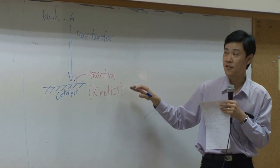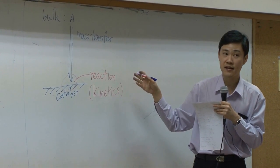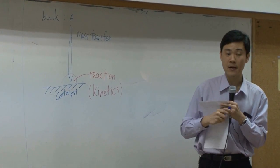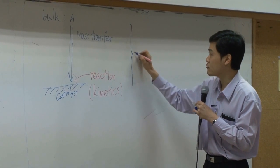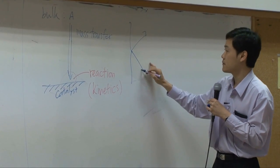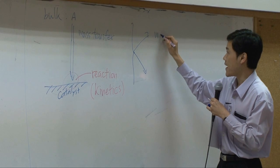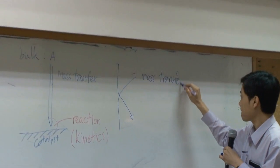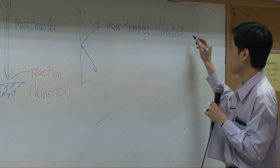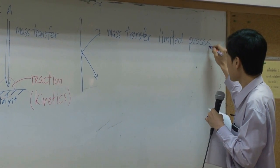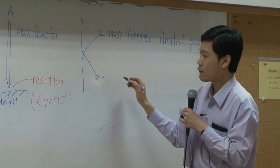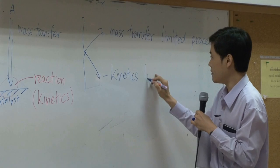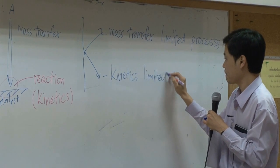But if the mass transfer is slower than the reaction, and therefore, the whole process is limited by mass transfer. So, you may have two kinds of problems. The first one is mass transfer limit process. And the second one would be kinetics limit process.